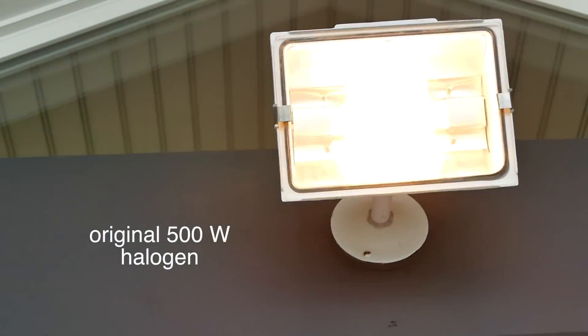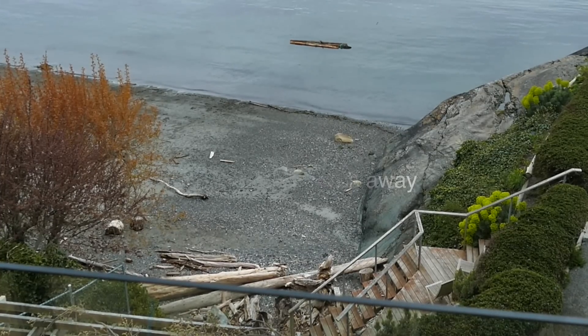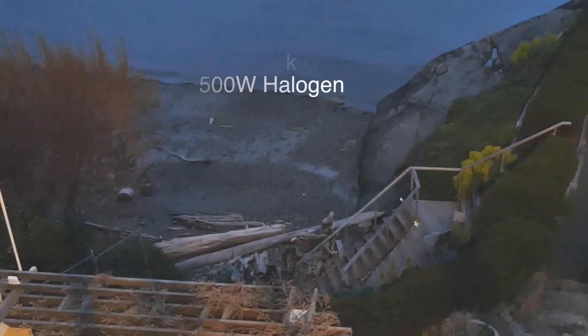The existing 500 watt halogen is a nice light but it produces a tremendous amount of heat. It only has a limited 2,000 hour life and they're delicate from a vibration point of view. It throws out a pretty good amount of warm white color balance.